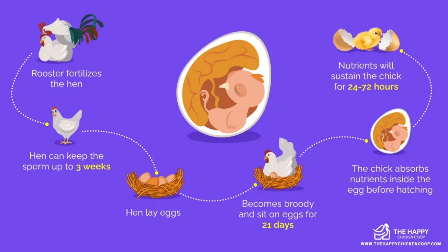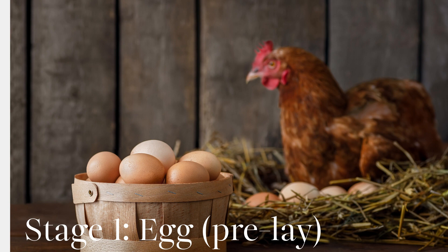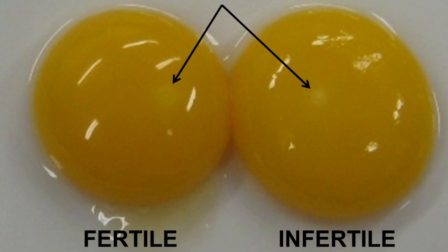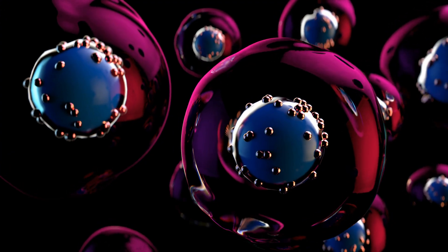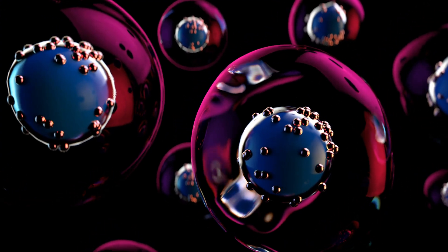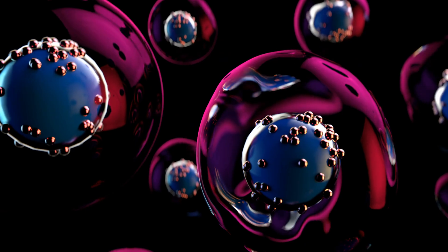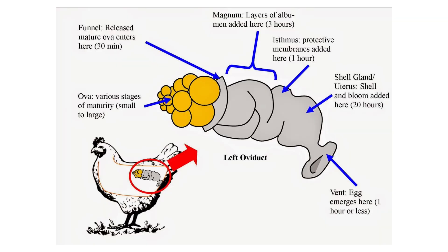Chickens start their life as eggs laid by hens in a cozy nest. In the beginning, the egg has a tiny bullseye called a blastoderm. The rooster mates with the hen and five hours after fertilization, cell division of the resulting zygote begins. This initial stage of development happens within the isthmus, which is where the inner and outer shell membranes of the egg form.